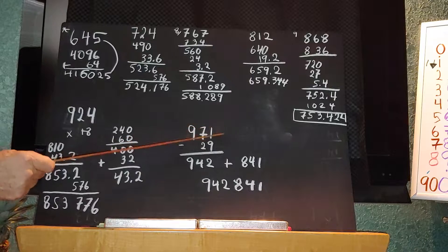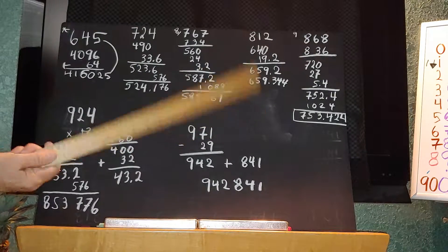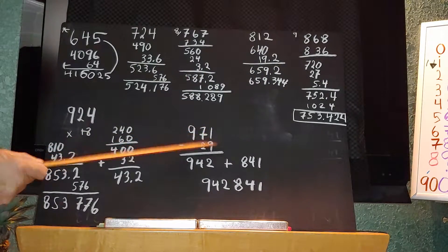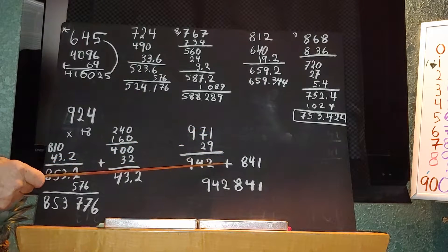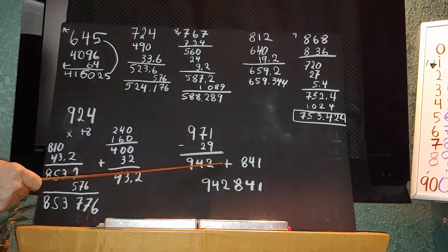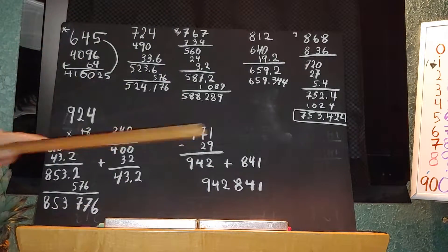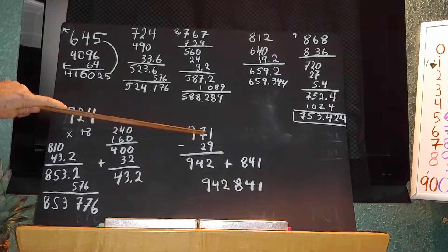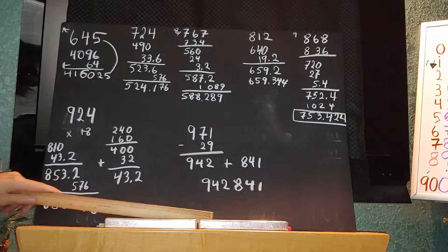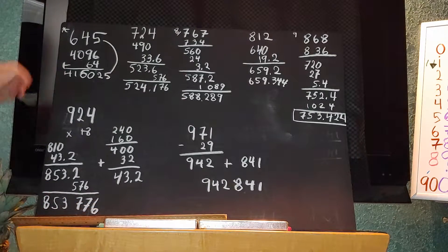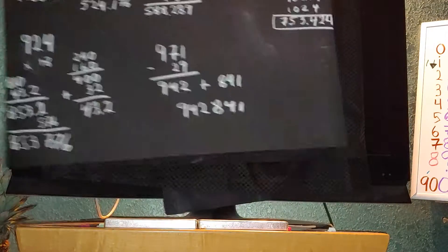The last one is the easiest because 71 plus 29 is 100. 71 minus 29: I go 71 minus 30 is 41, then add 1, so that's 942. Then you just do 29 squared which is 841. Now we're going to get back to the special effects that the 369 code has on our numbers.